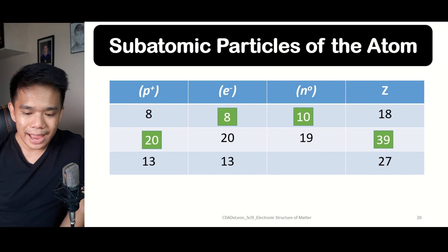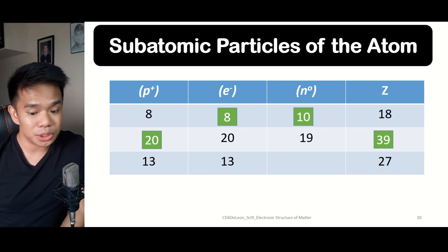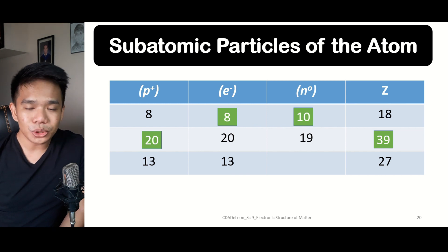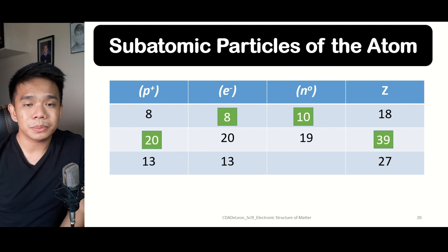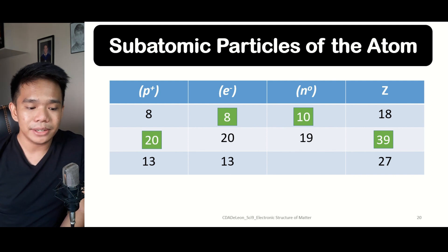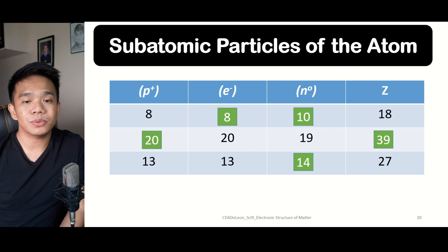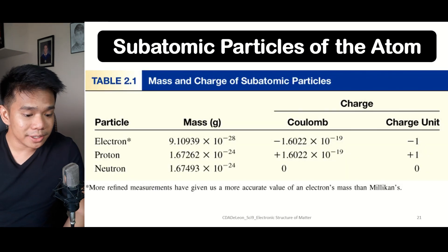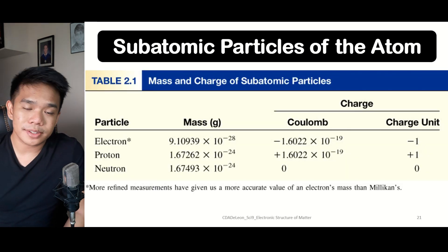For the last row, we have 13 protons and an atomic mass of 27, and we need to find the number of neutrons. Simply subtract the number of protons from the atomic mass: 27 minus 13 equals 14 neutrons. The table summarizes the different properties among the subatomic particles, including mass and charge.